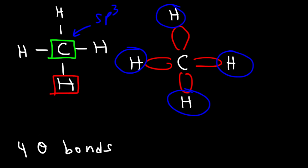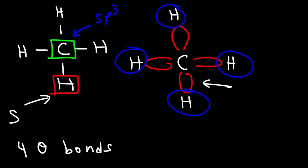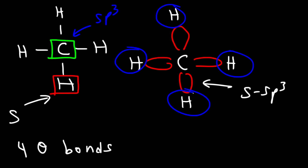The hydrogen orbital is simply an s orbital. To describe the bond connecting carbon and hydrogen, we can say it's a hybrid of s and sp3. The sp3 orbitals belong to carbon, and hydrogen contributes an s orbital. So when you mix an s orbital with an sp3 orbital, you describe the bond as an s–sp3 bond.